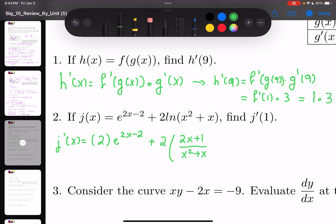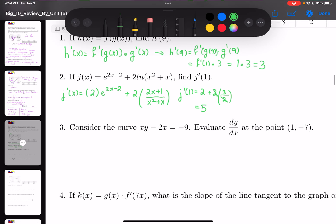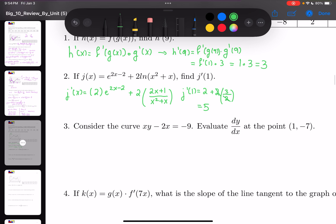So j'(1) is going to be 2e^0, which is 1, plus 2 times (2*1+1)/(1+1), which is 3/2.